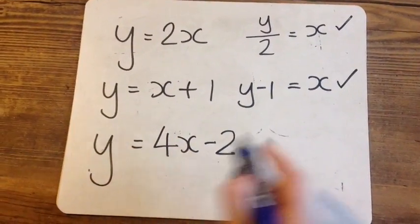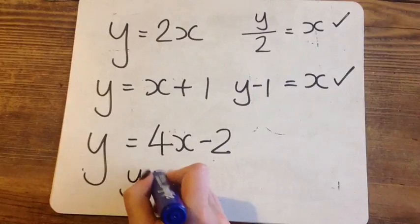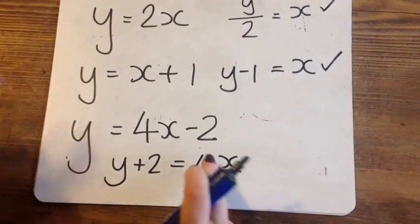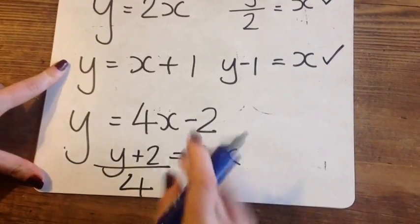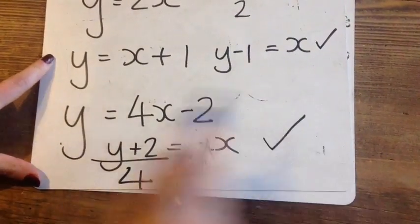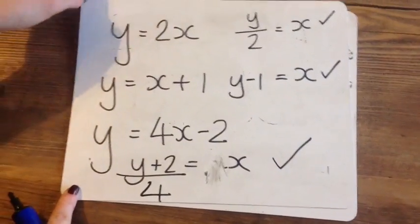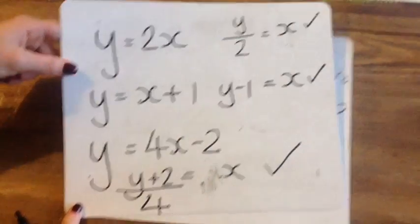Start off moving this minus 2. And then move this times 4. Done. If you got any of those wrong, ask somebody else in the class or put your hand up.